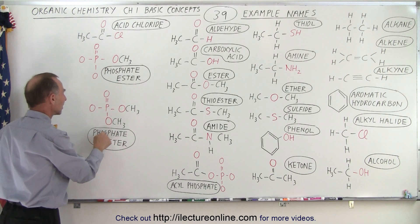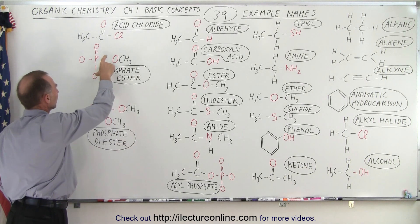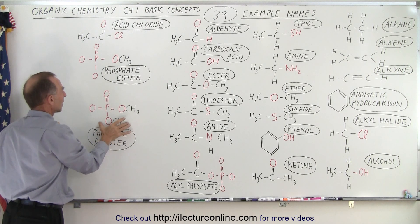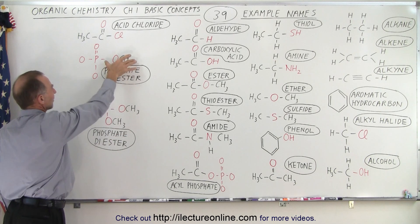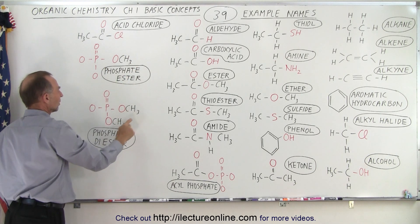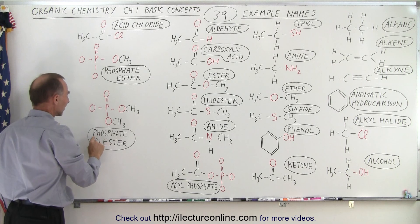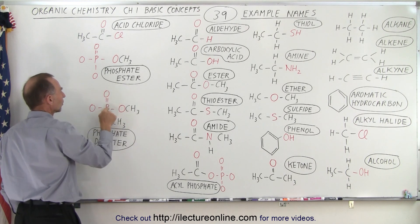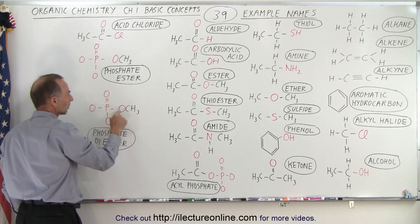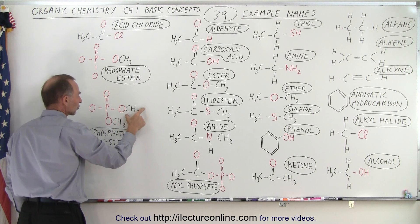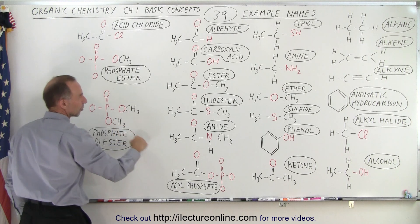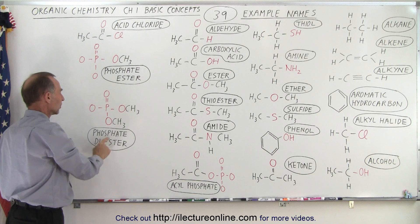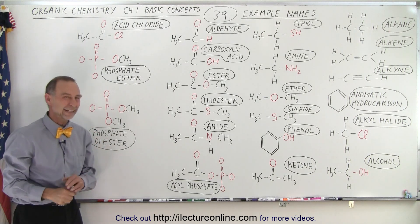Here we have a phosphate diester. The difference between this one and this one is that we have a second oxygen with a CH3 attached to it. Notice that instead of having one we have two, so therefore they call that the phosphate diester. Ester because we have an oxygen double bonded to what otherwise would have been a carbon with an oxygen and a CH3 group there, just like we have for the ester right here. But now we have two of them and phosphate instead of carbon, so we call that phosphate diester.